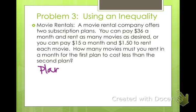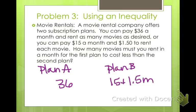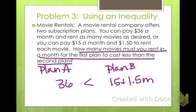So here we go. We've got plan A, plan B. So plan A is $36, plan B is $15 plus $1.50 M. So you want how many movies must you rent in a month for the first plan to cost less than the second plan. So you want it to be less than. So go ahead and solve this.